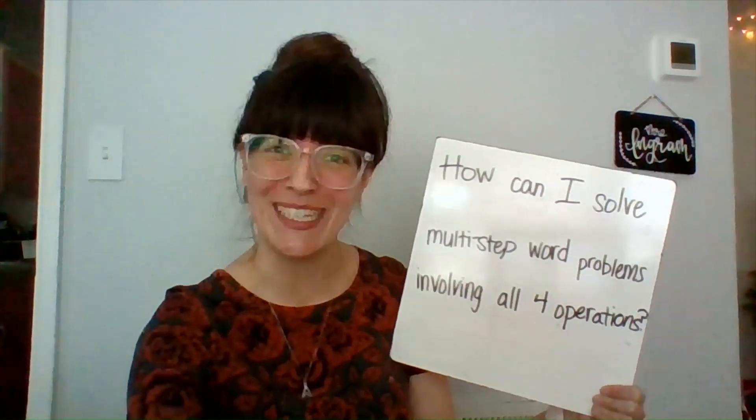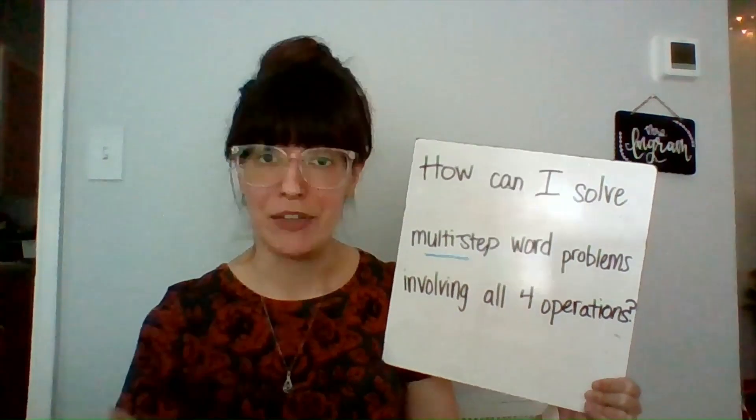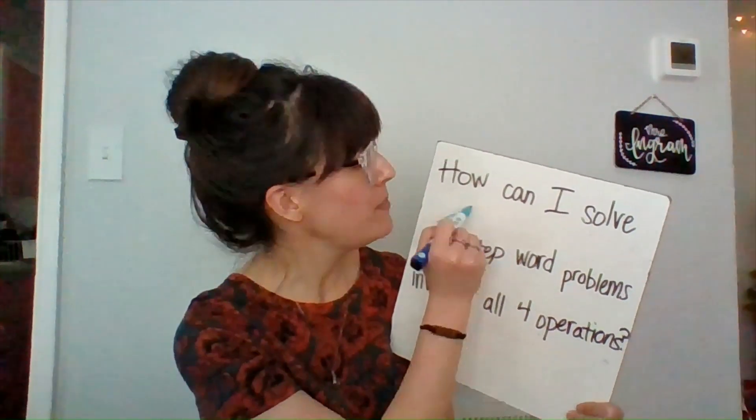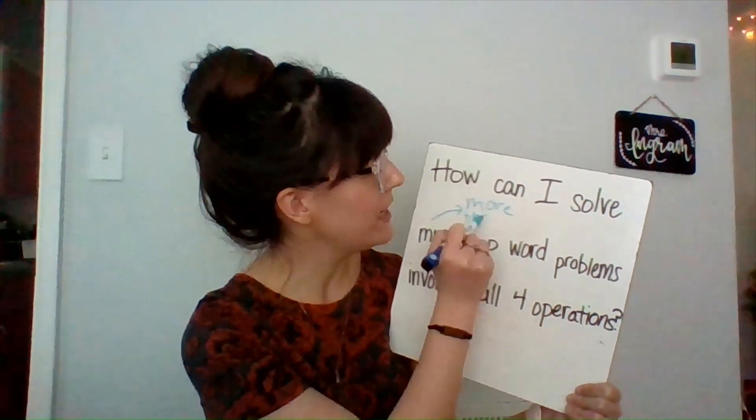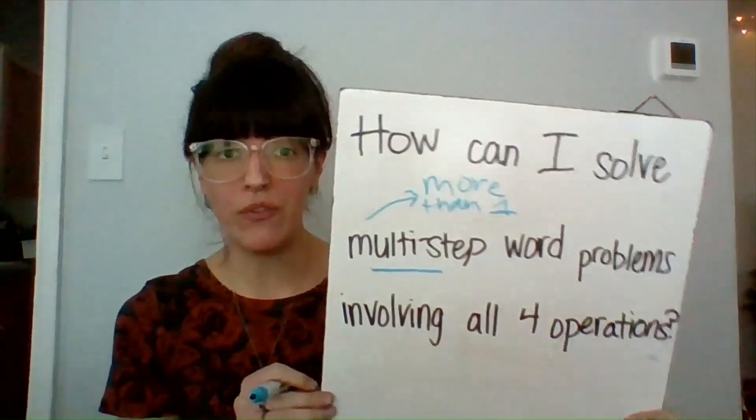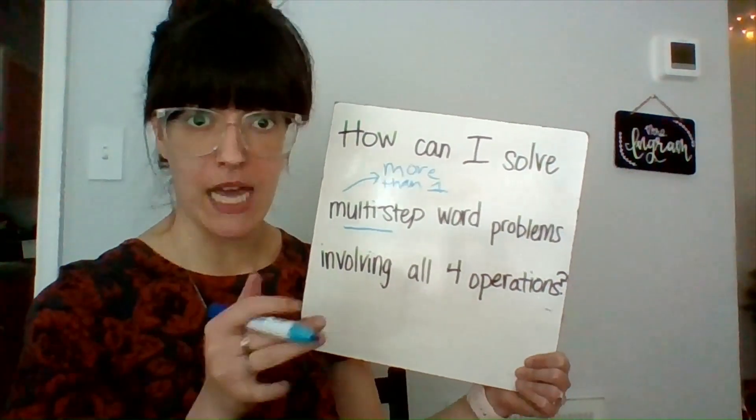So just like always, let's break it down. Multi-step, what is that giving us a clue about? That's right, we're going to be doing more than one problem. More than one. Because we know that as we solve this, we're going to need to do more with the information than just one step.